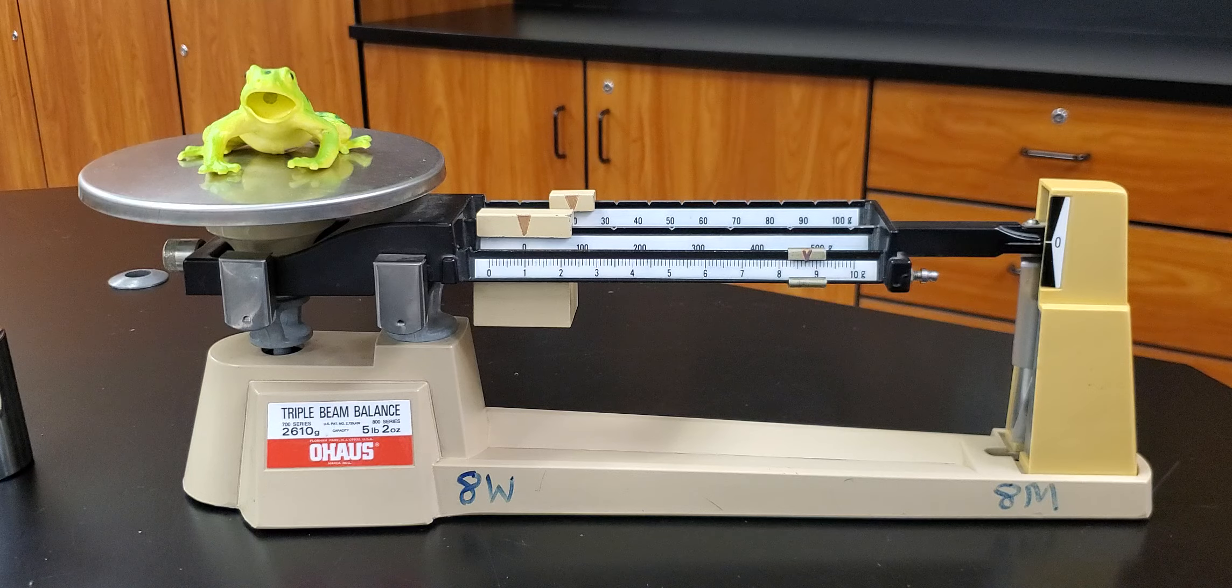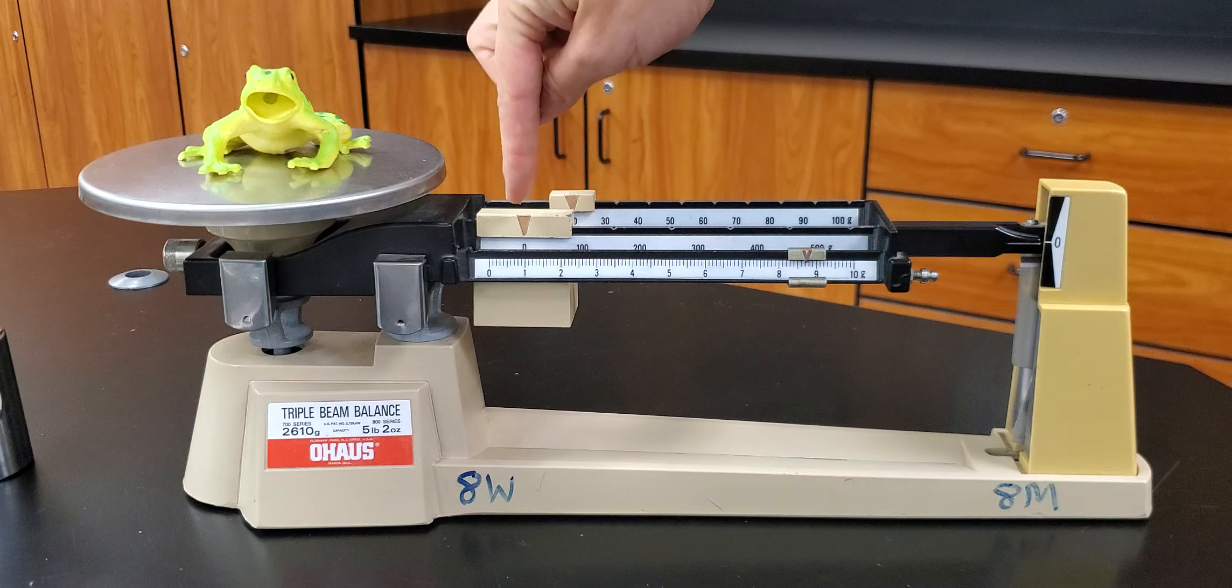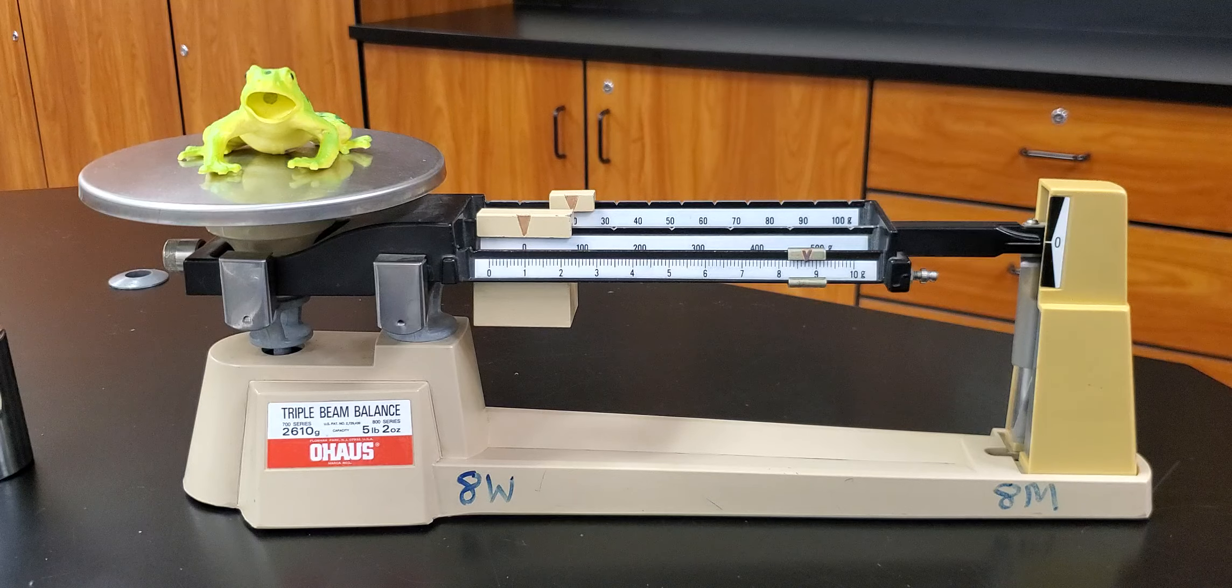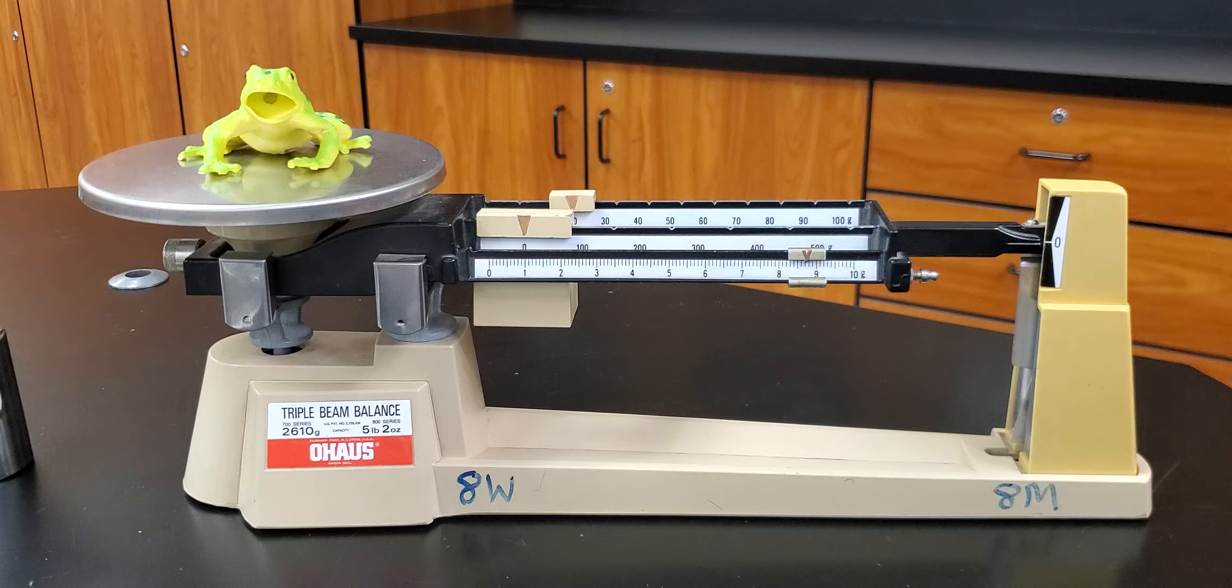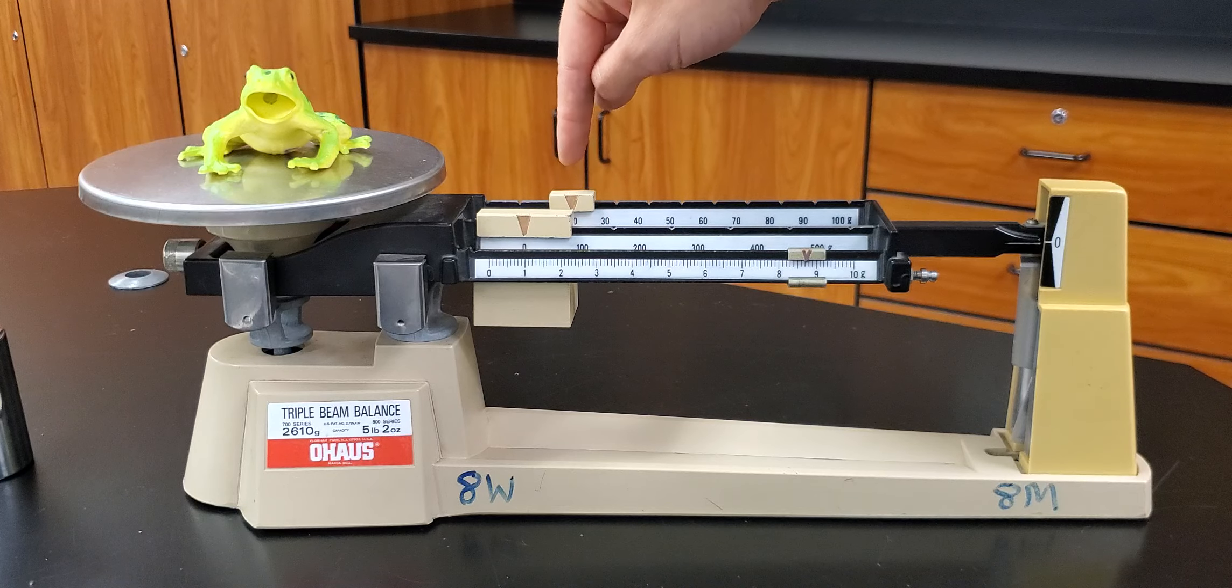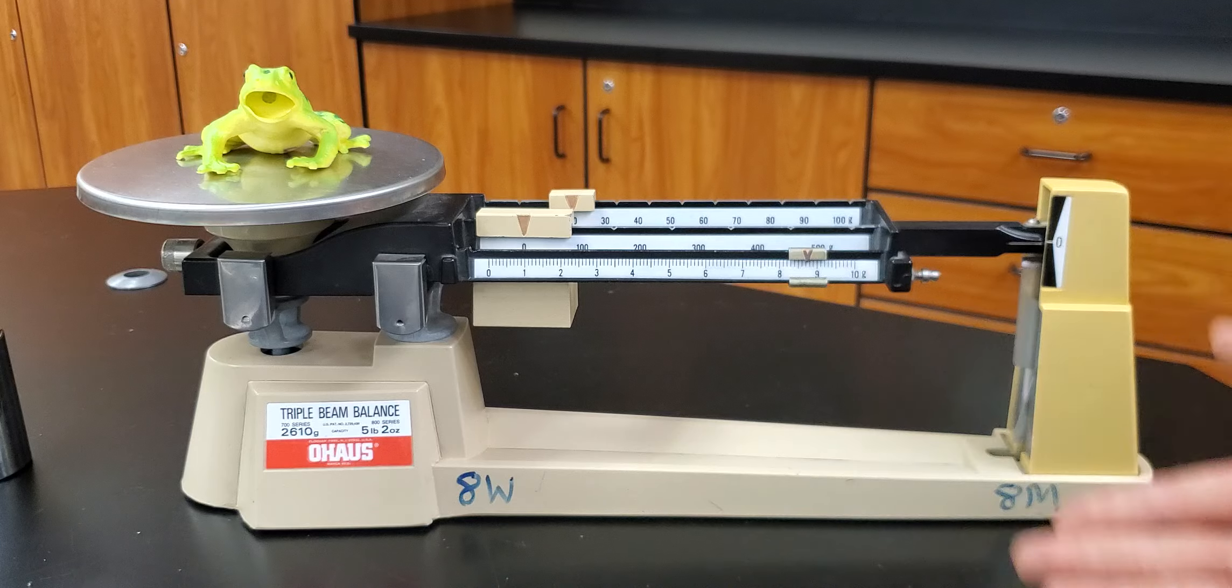Now we need to know how to read the mass that we've measured. So in the hundreds place we're pointing at zero. So we have less than 100 grams. But we do have a reading in the tens place and in the ones place. So in the tens place we're reading 20. So I know that my frog has a mass of 20 something.